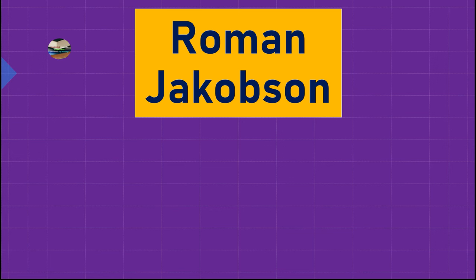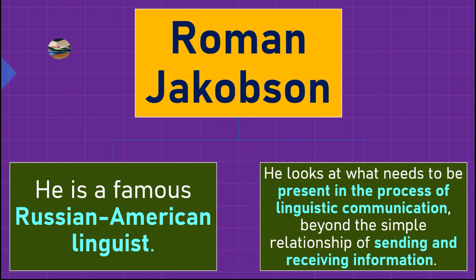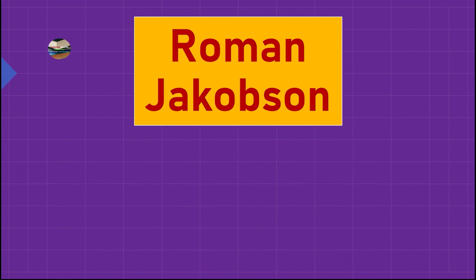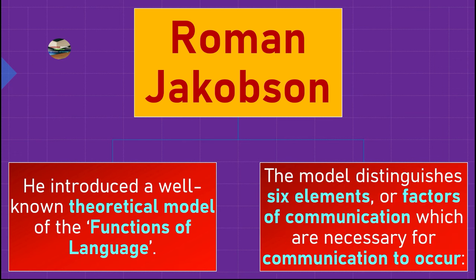With that in mind, let's talk about Roman Jakobson's ideas about the functions of language. He is a famous Russian-American linguist who looks at what needs to be present in the process of linguistic communication beyond the simple relationship of sending and receiving information. He introduced a well-known theoretical model that distinguishes six elements or factors of communication which are necessary for communication to occur — without which communication cannot happen at all.